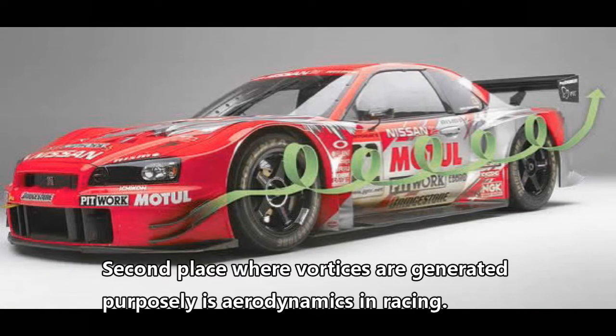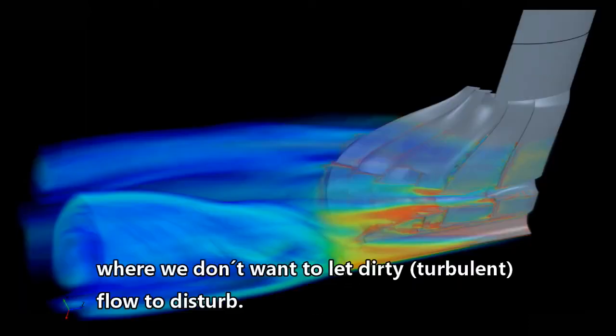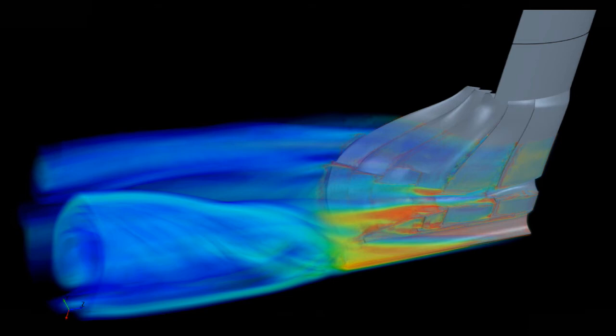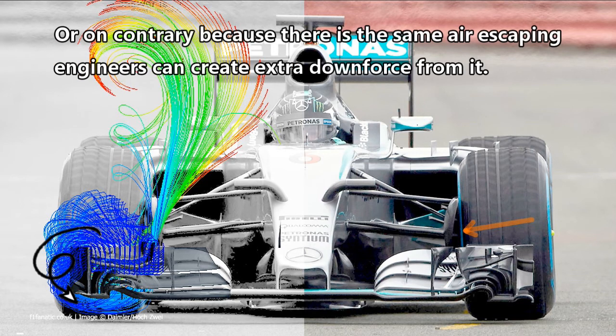The second place where vortices are generated purposely is aerodynamics in racing. Because a vortex has higher energy, it can be used as shields for other flow areas where we don't want to let certain flow disturb us. Usually, they don't want to let high pressure air go under the car. Or on the contrary, because there is air escaping, engineers can create extra downforce from it.